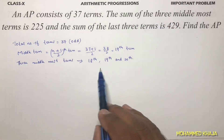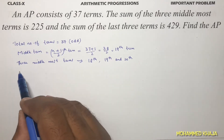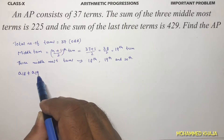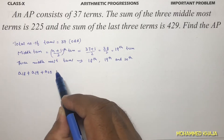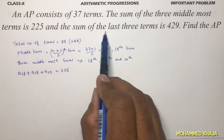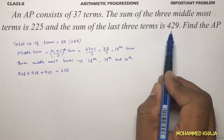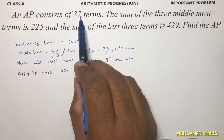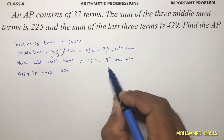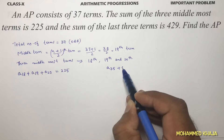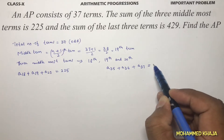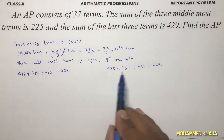According to the question, a18 + a19 + a20 = 225. The second condition is that the sum of the last three terms is 429. When there are 37 terms, the last three are the 35th, 36th, and 37th terms, so a35 + a36 + a37 = 429.